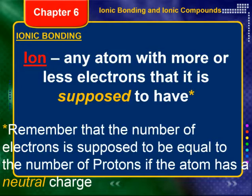We keep throwing around the word ion — let's make sure we understand exactly what an ion is. An ion is any atom, or even a group of atoms, with more or less electrons than it's supposed to have. The number of electrons is supposed to equal the number of protons if the atom has a neutral charge. On the periodic table, we see atoms with neutral charges, so that's why we assumed that the atomic number — the number of protons — was how many electrons that atom had.